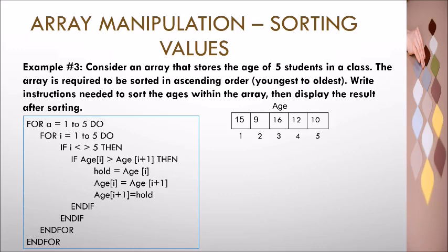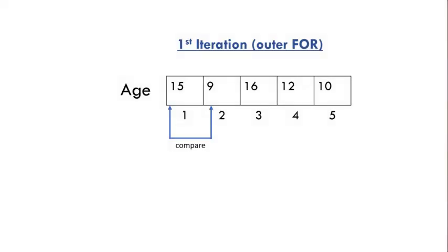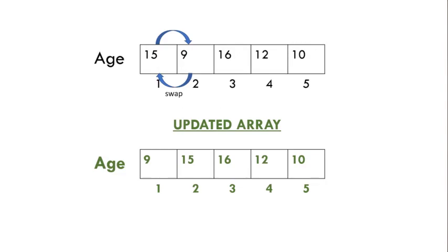The inner loop uses a technique referred to as bubble sorting. This method compares adjacent elements within the array to determine which is larger. If the first element is larger than the second, a swap will occur; otherwise the next two adjacent elements are compared. This continues until the largest element moves to the end of the array. The illustration shows the first two elements compared and swapped because fifteen is greater than nine.